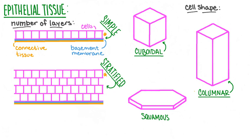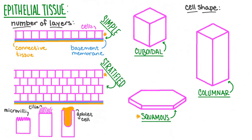If the cells of the outer layer are oblong-shaped, we refer to them as columnar; if the cells in the top layer are flat, we refer to it as squamous. Depending on function and location, some epithelial tissue may possess cells with special features. One example is microvilli, which aid in absorption. Some epithelial cells possess cilia, which move in a sweeping motion and push materials from place to place. Another variation is goblet cells, which secrete substances such as mucus.